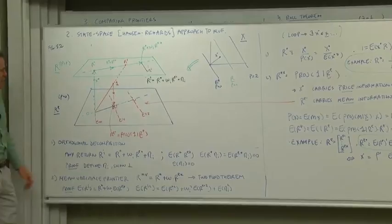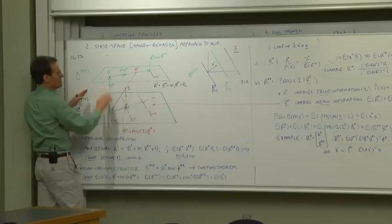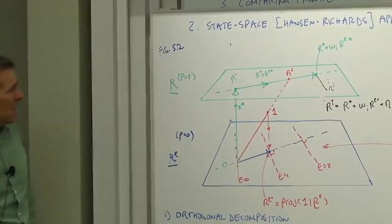Now let's look at that a little more closely. I drew a three-dimensional version here, so there's the origin. Now we have a space here of excess returns, it's a three-dimensional hyperplane, and the space of returns is a plane in this three-dimensional space a little bit above.